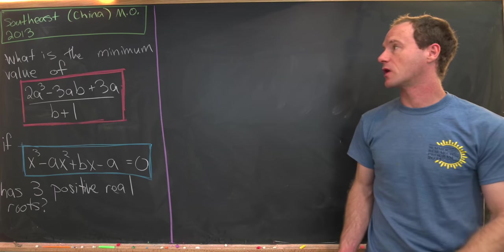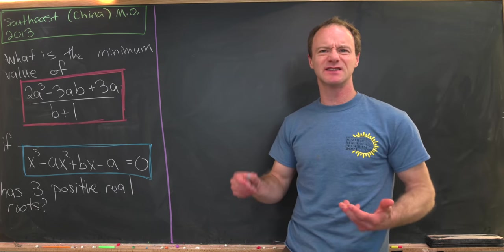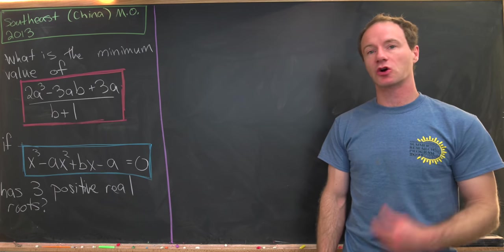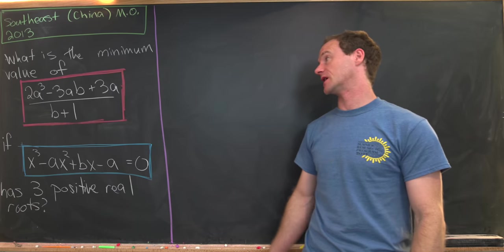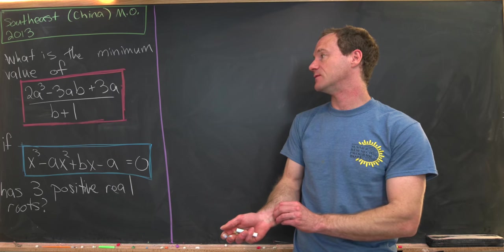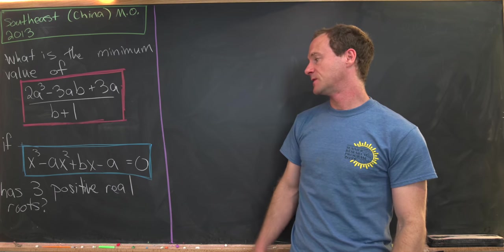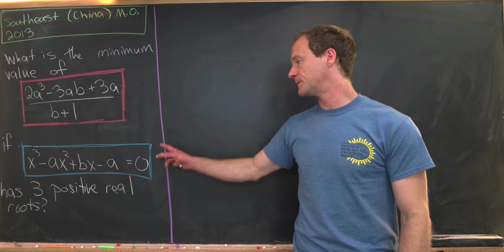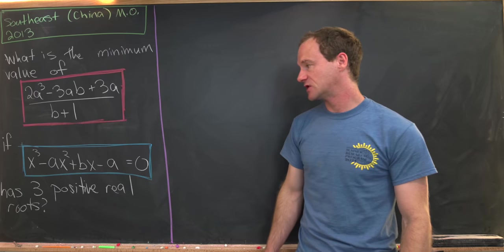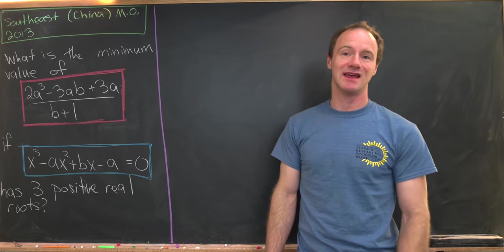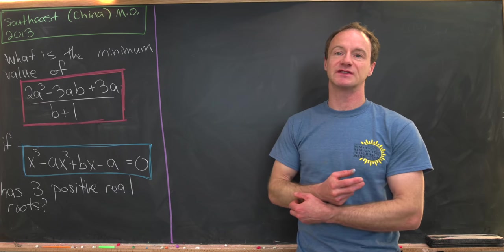Here we have a polynomial problem from the Southeast Math Olympiad, year 2013, given in China. Our goal is to find the minimum value of the rational expression 2a³ minus 3ab plus 3a, all over b plus 1, given the condition that the cubic polynomial x³ minus ax² plus bx minus a equals 0 has 3 positive real roots.